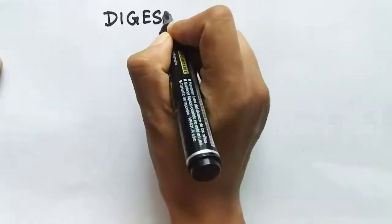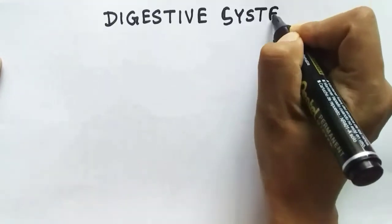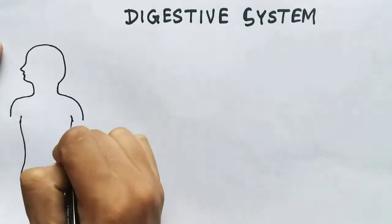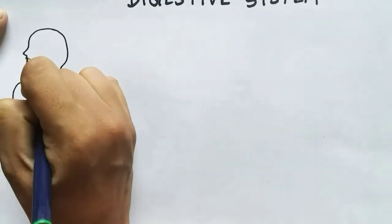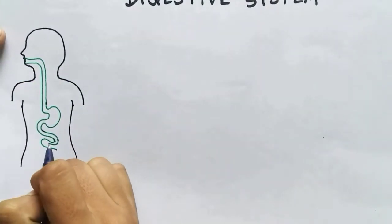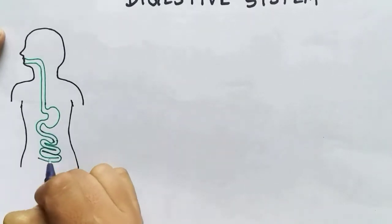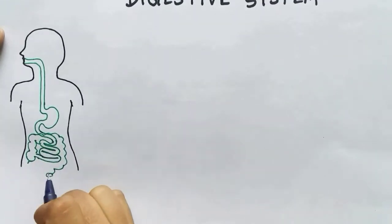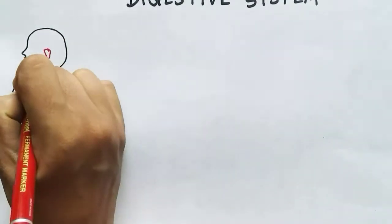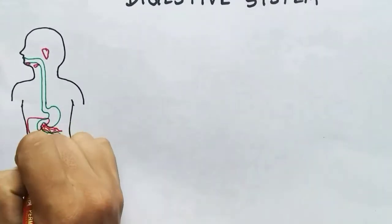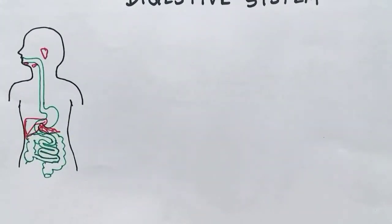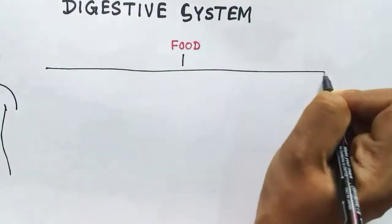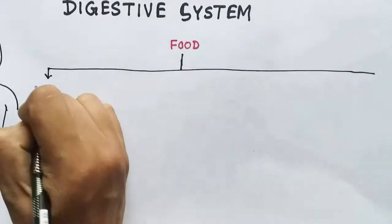In this video we are talking about the digestive system of humans. The human digestive system is a pipe-like structure which starts from the mouth and ends in the anus. In between we have some organs like the stomach, small intestine, and large intestine where the digestion of food occurs. There are some glands which help in digestion, such as the salivary glands, liver, and pancreas. Digestion of food means breaking down the food into molecules that can be absorbed by the body.